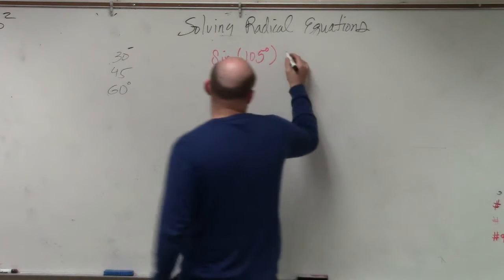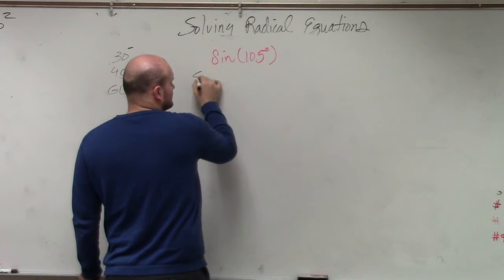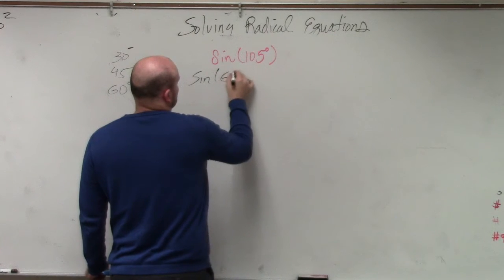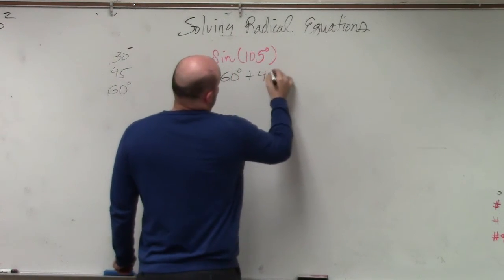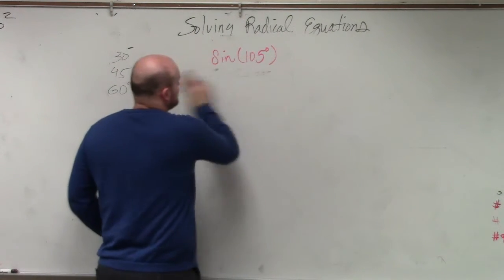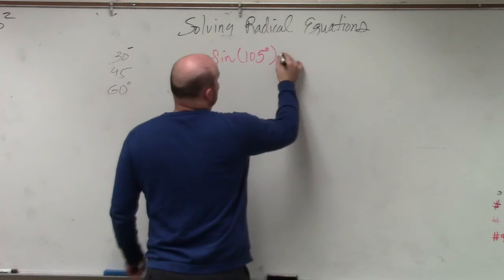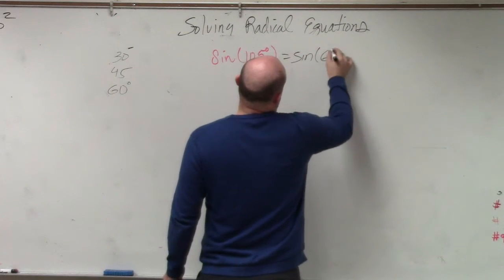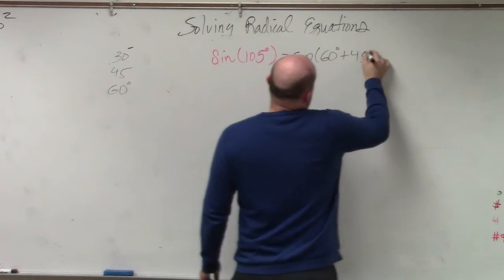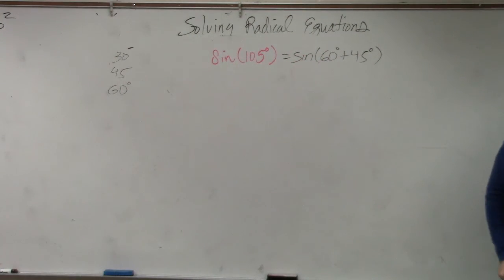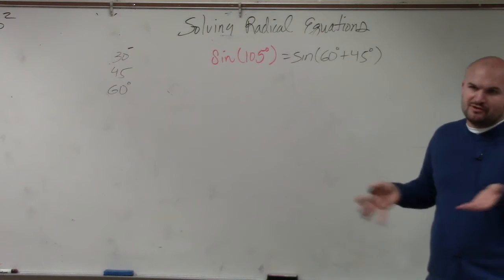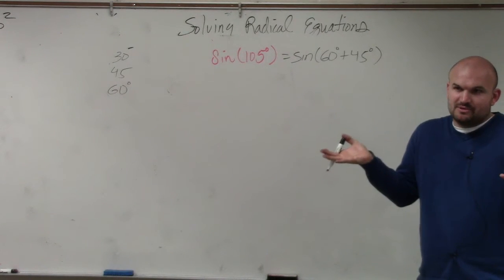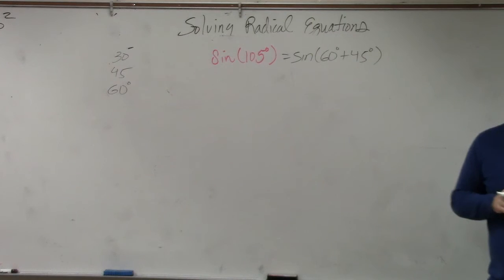I could rewrite this as the sine of 60 degrees plus 45 degrees. Does everybody agree with me? And that's basically what you're going to be doing. When you have an equation with your angles broken up by sum or difference, you're going to have them in this format.